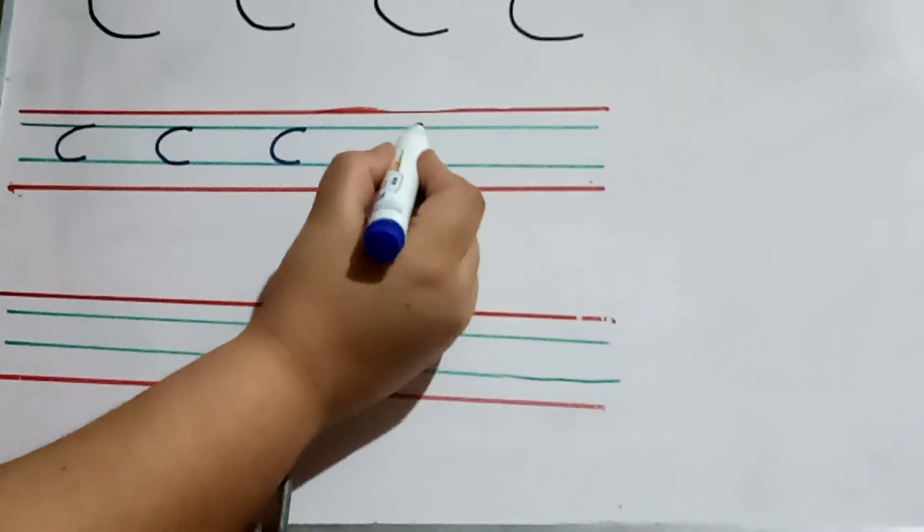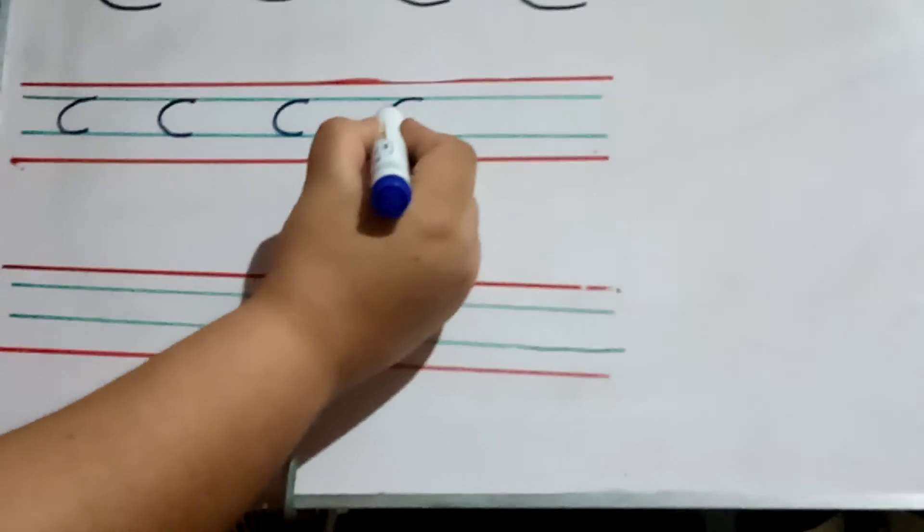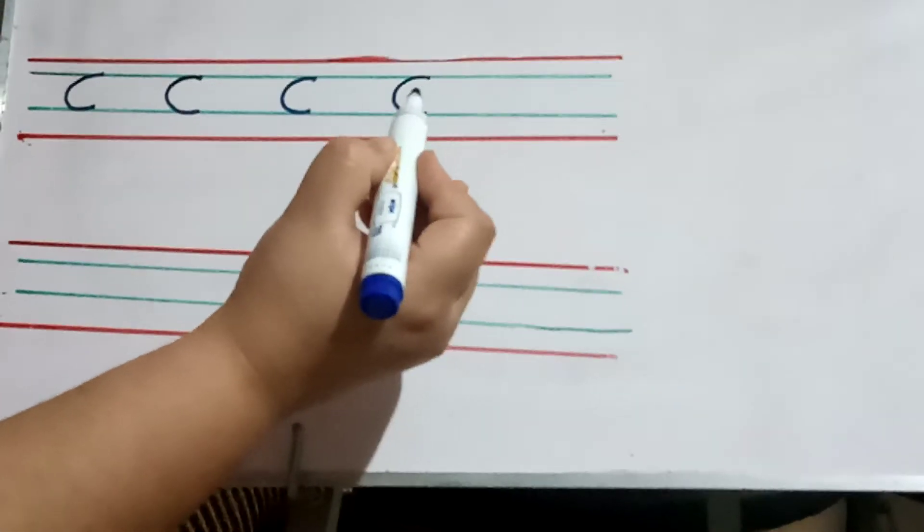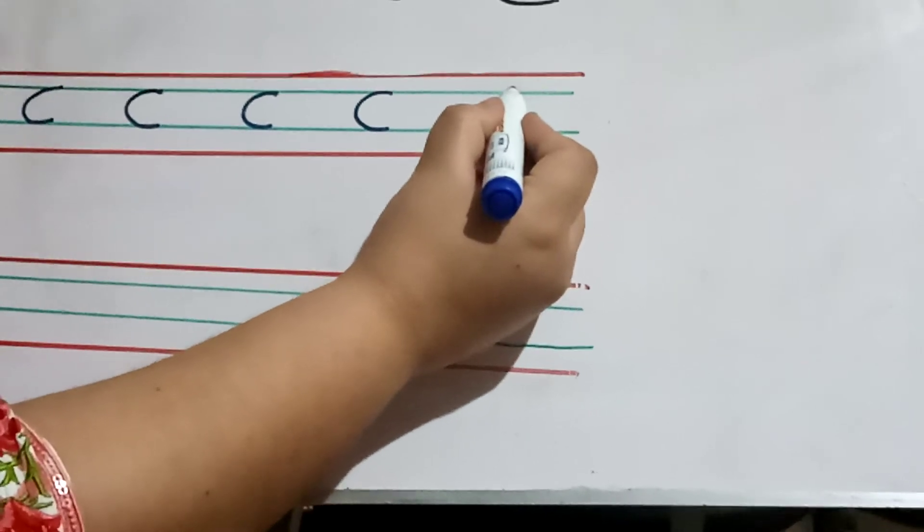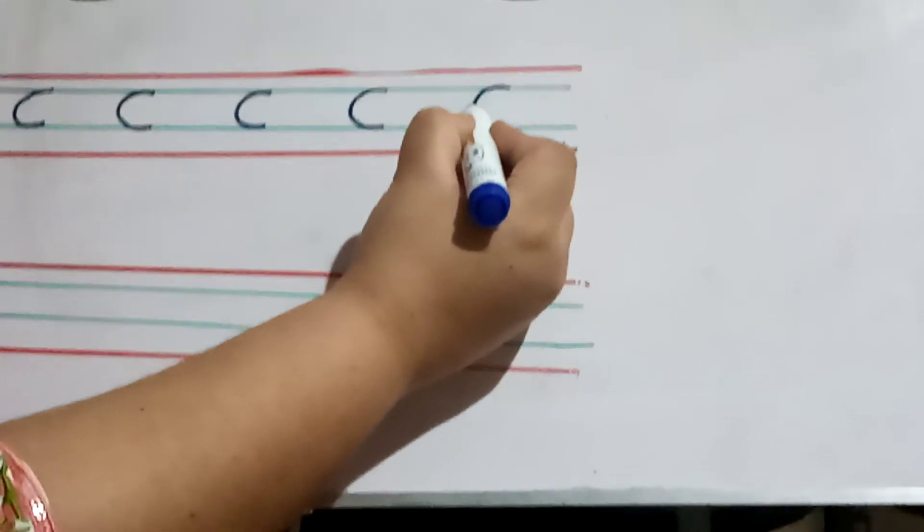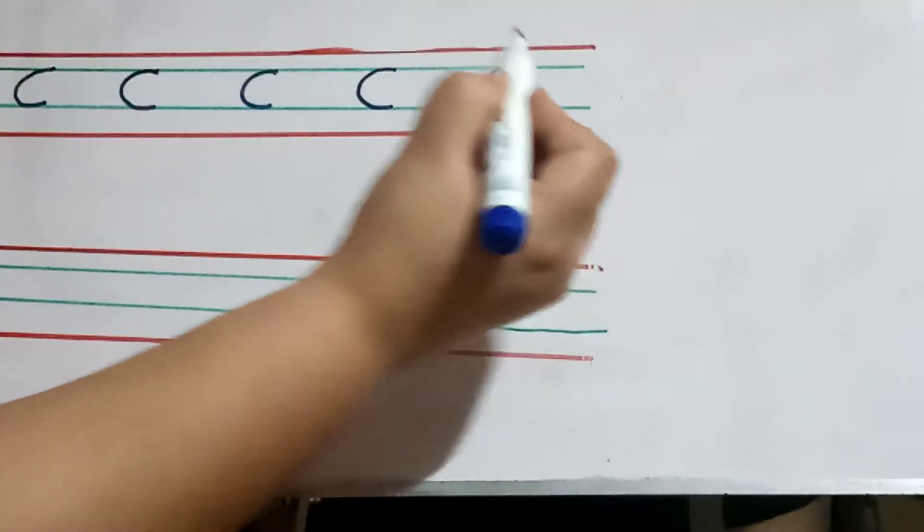Start from here, come down, C. It's your letter C. C-C, C-Cat, C-Cake.